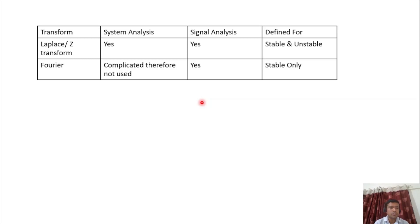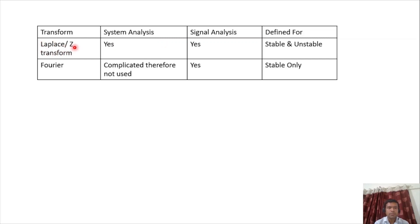In this video we'll see the relationship between different transforms: Laplace transform, Z-transform, Fourier transform, DFT, etc. A system is the combination of different resistors, capacitors, and inductors in the analog domain, and in the digital domain it consists of delay elements, adders, and subtractors. Laplace and Z-transforms can be used for system analysis as well as signal analysis.